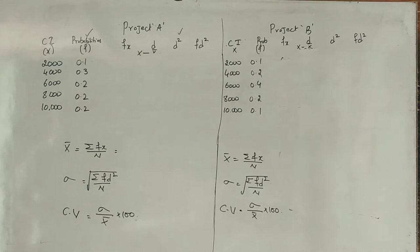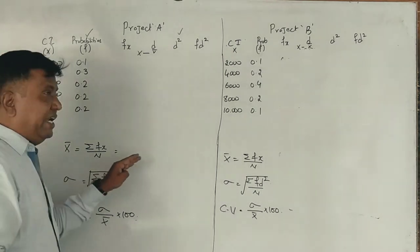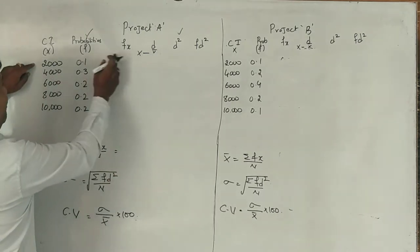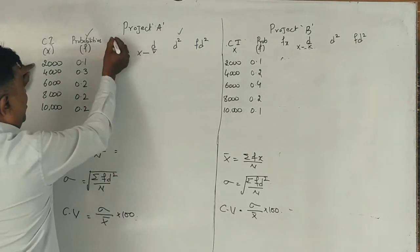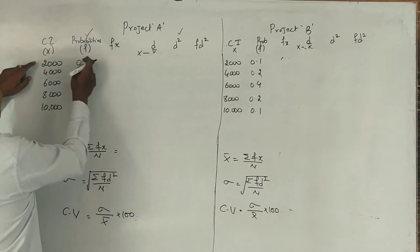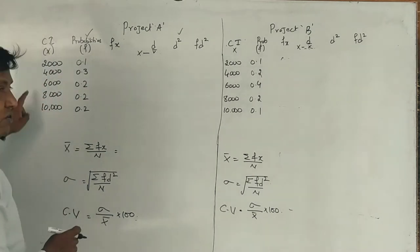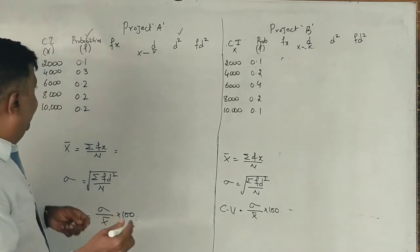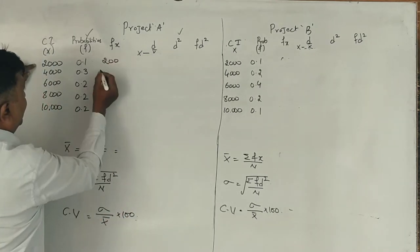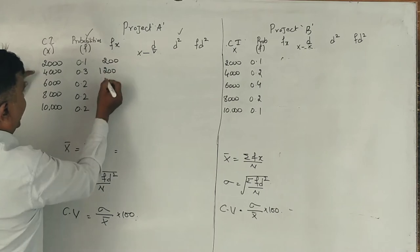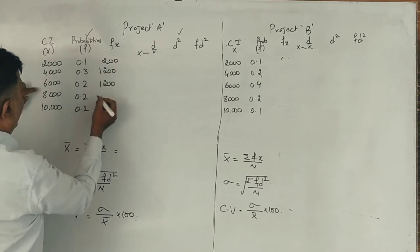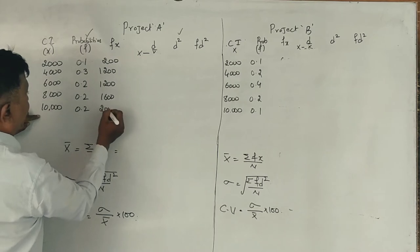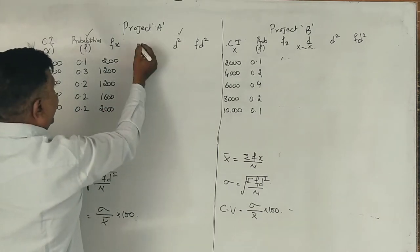Now the question asks for mean, standard deviation, and coefficient of variation. We calculate F into x, where F is probabilities and x is cash inflows.